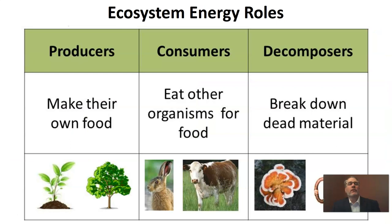Let's do a quick review of energy roles. In an ecosystem, energy roles describe how an organism obtains its nutrition. First, we have producers — mostly plants — which are organisms that make their own food. Second, we have consumers, organisms that eat other organisms for their food. Finally, we have decomposers, which feed on dead material. Decomposers are technically just another type of consumer, but they're important enough to have their own group. So the three energy roles are producers, consumers, and decomposers.